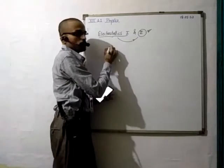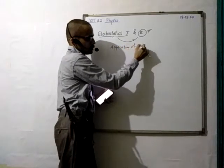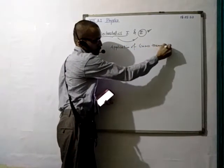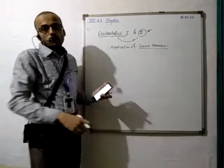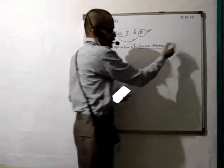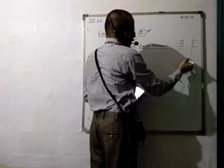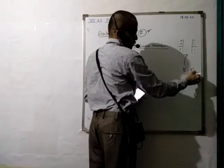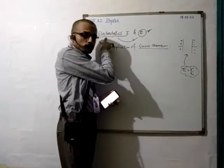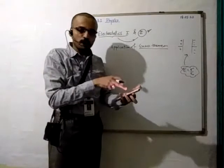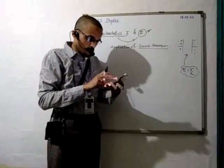For example, the application of Gauss's theorem — those applications are there where you are expected to calculate the electric field. When sheets or two plates are there and charge is developed, you are expected to find sigma upon epsilon naught. For that, you will need Electrostatics 1. I have given that in the sheet — page number 1 is the introduction.